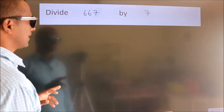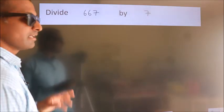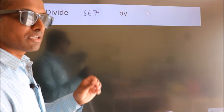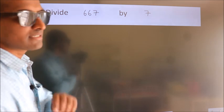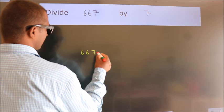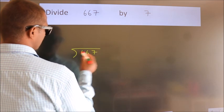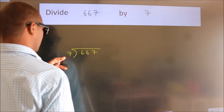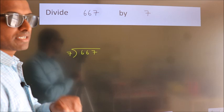Divide 667 by 7. To do this division, we should frame it in this way: 667 here, 7 here. This is your step 1.